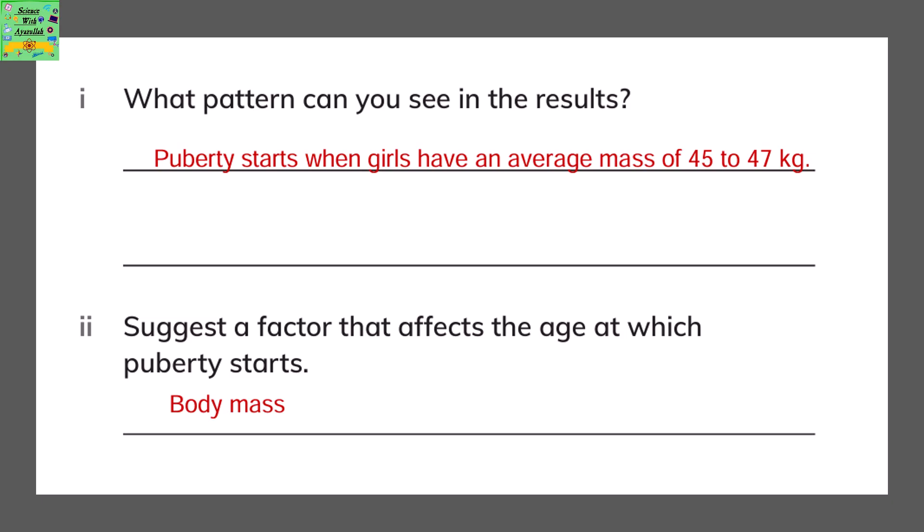What pattern can you notice in the results? Puberty starts when girls have an average mass of 45 to 47 kg. Suggest a factor that affects the age at which puberty starts — it's the body mass.